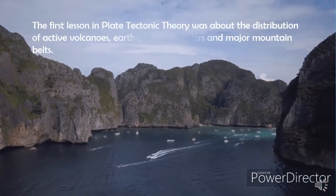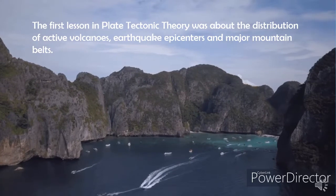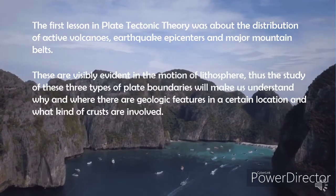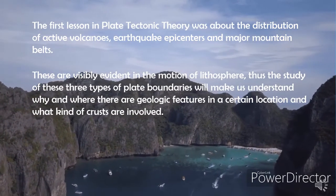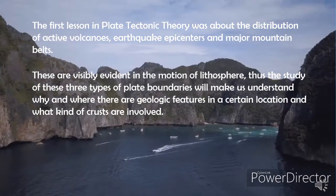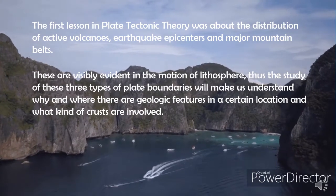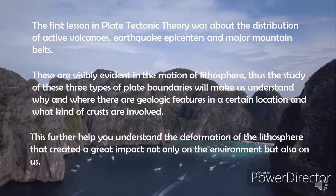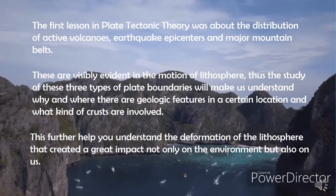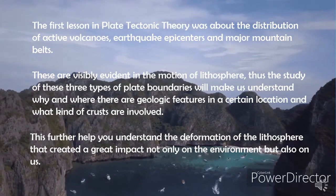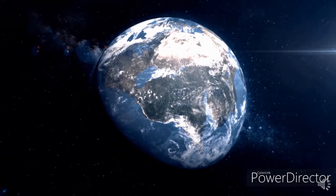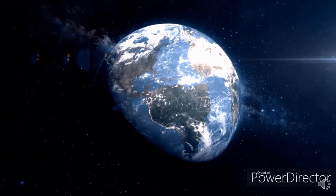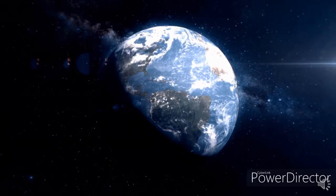The first lesson in plate tectonic theory was about the distribution of active volcanoes, earthquake epicenters, and major mountain belts. These are visibly evident in the motion of the lithosphere. The study of these three types of plate boundaries will help us understand why and where there are geologic features in a certain location, and what kind of crust is involved.